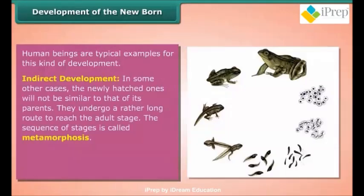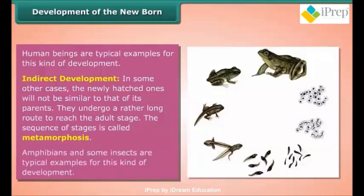Indirect development: In some other cases, the newly hatched organisms are not similar to their parents. They undergo a rather long route to reach the adult stage; the sequence of stages is called metamorphosis. Amphibians and some insects are typical examples of this kind of development.